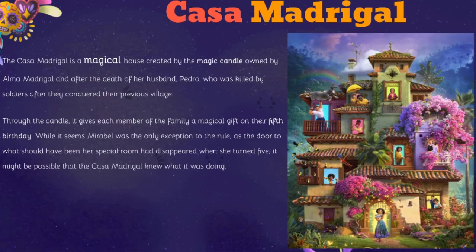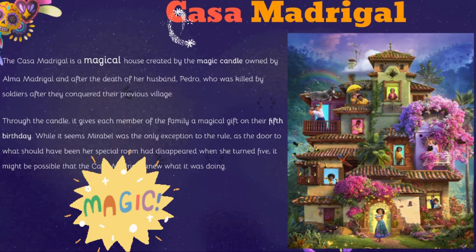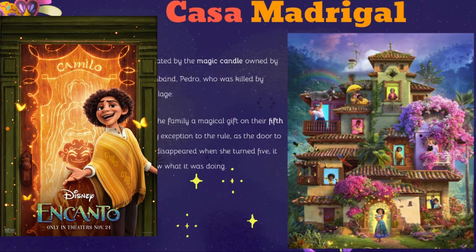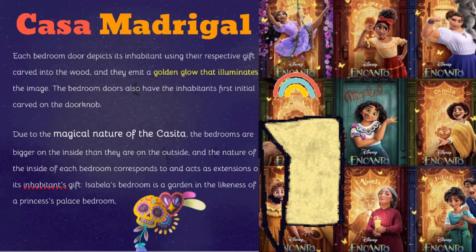The house that the Madrigals live in is of course magical. Each bedroom door depicts its inhabitants using their respective gift carved into the wood, and they emit a golden glow that illuminates their image. The bedroom doors also have the inhabitants' first initial carved on the doorknob. Due to the magical nature of the casita, the bedrooms are bigger on the inside than on the outside, and the nature of each bedroom corresponds to and acts as an extension of the inhabitants' gift.